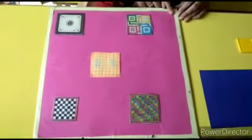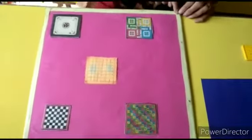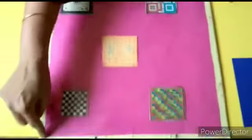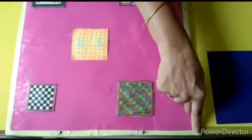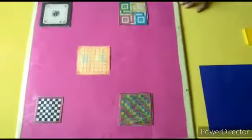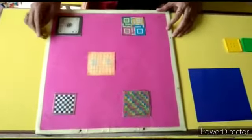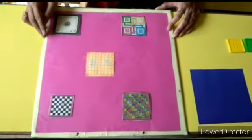And how many corners children? Let us count. 1, 2, 3 and this is the 4th corner. So square has 4 corners also. Okay.